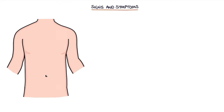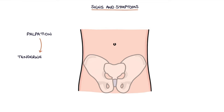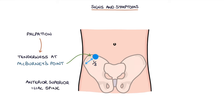Let's talk about the signs and symptoms. The key presenting feature of appendicitis is abdominal pain. This typically starts as central abdominal pain that moves down to the right iliac fossa, or RIF, within the first 24 hours, eventually becoming localised in the right iliac fossa. On palpation of the abdomen, there is tenderness at McBurney's point, which refers to a specific area one-third of the distance from the anterior superior iliac spine, or ASIS, to the umbilicus, or the belly button.